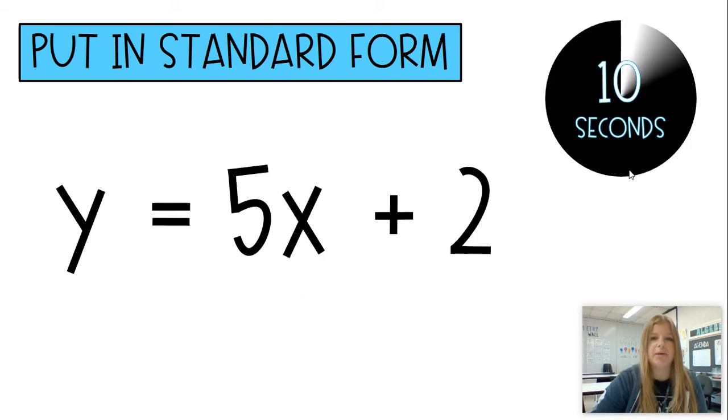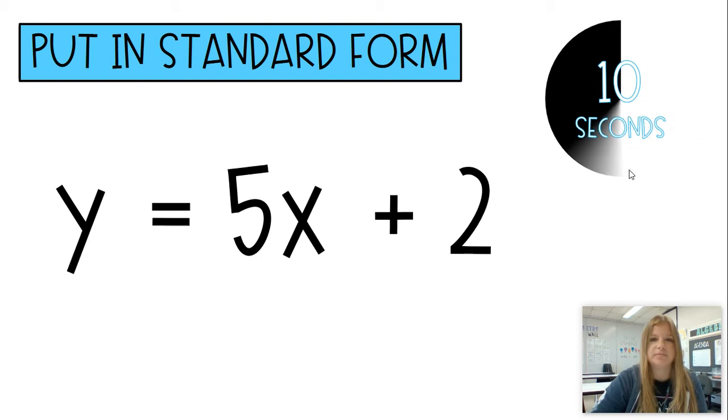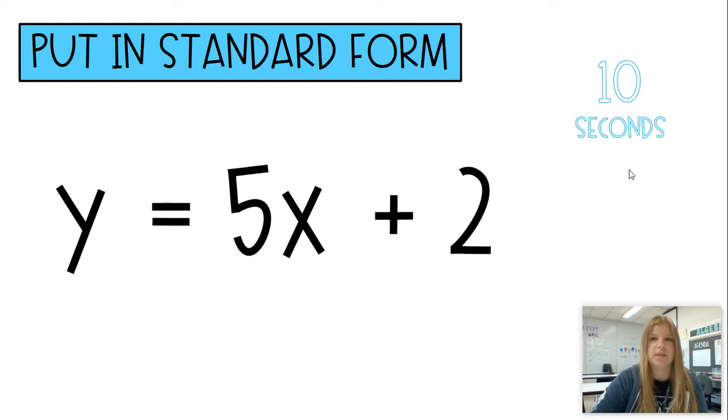Next one. Y equals 5X plus 2. So for this one, there's two steps. You could have subtracted 5X and then multiply or divide the entire equation by negative 1, because we don't want a negative A value.